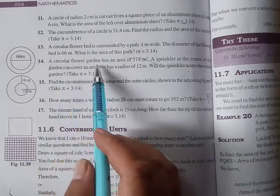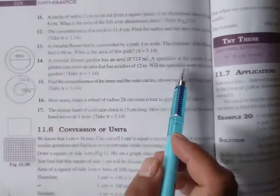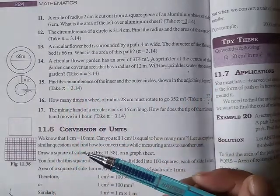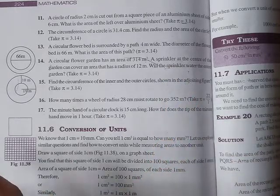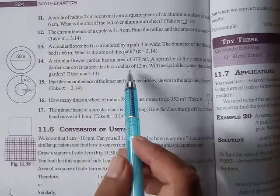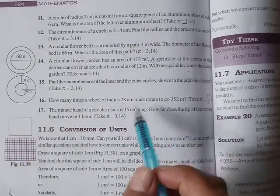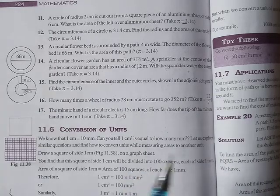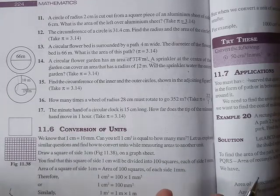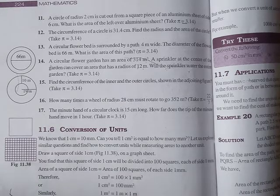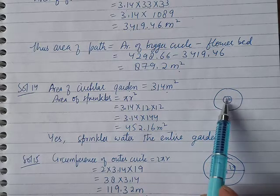Question number 14. A circular flower garden has an area of 314 m². A sprinkler at the center of the garden can cover an area that has a radius of 12 m. Will the sprinkler water the entire garden? This is a circular flower garden where the flowers are growing. The area is 314 m². When the sprinkler sprays fresh water from the center, the radius is about 12 m.